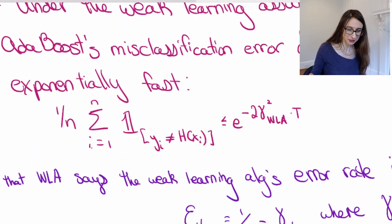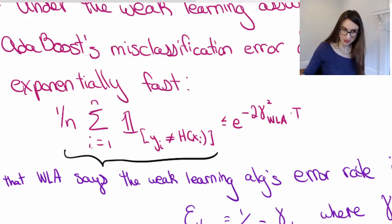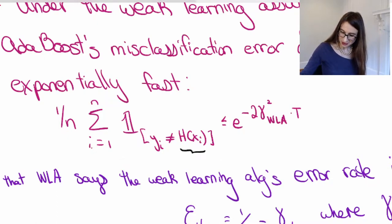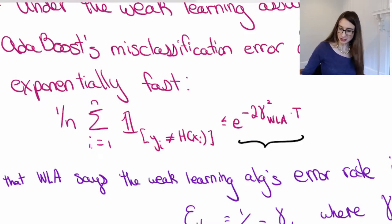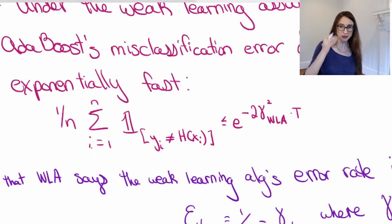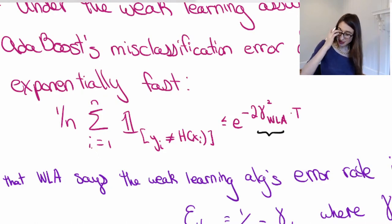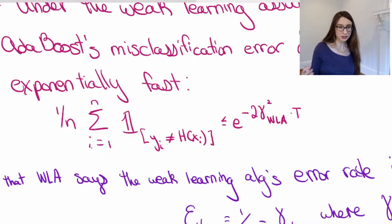The theorem we're going to prove is that the misclassification error of Adaboost — H_T is its combined classifier — the error rate of this combined classifier is less than a quantity that decays exponentially with the number of rounds of Adaboost. And this gamma_WLA is strictly greater than zero, and it is a result of the weak learning assumption.